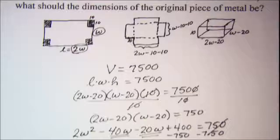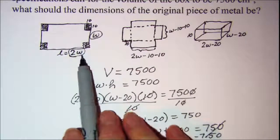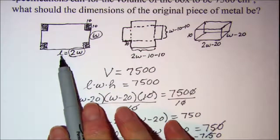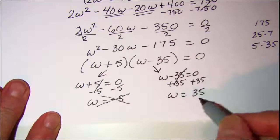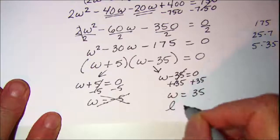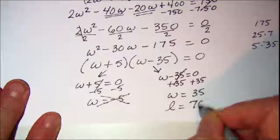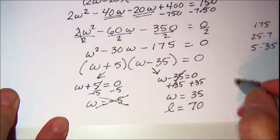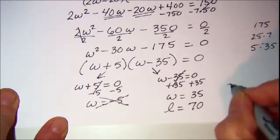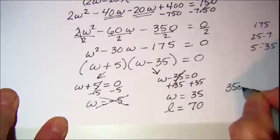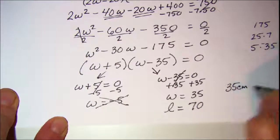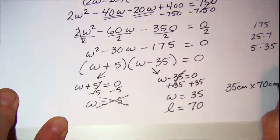From the original problem, the length is twice the width. So if the width is 35, the length is 70. My dimensions are 35 centimeters by 70 centimeters. Great, thank you.